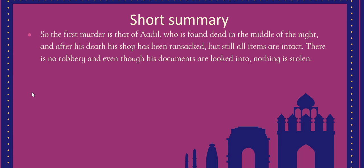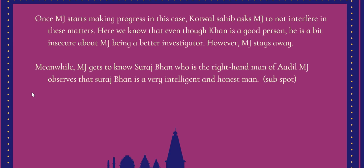The first murder is that of Adil, who is found dead in the middle of the night. His shop has been ransacked but all items are intact — there is no robbery, and nothing is stolen even though his documents are looked into. Once Muzaffar Jung is making progress, the Kotwal tells him not to interfere, and Muzaffar Jung complies out of respect. Meanwhile, he gets to know Suraj Bhan, a Hindu man who was the right-hand man of Adil Khan, and through him develops a respect for Hindu honesty and intelligence.